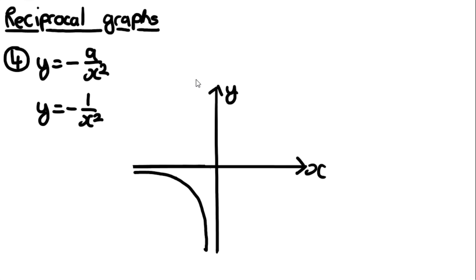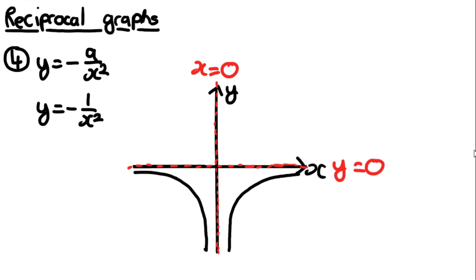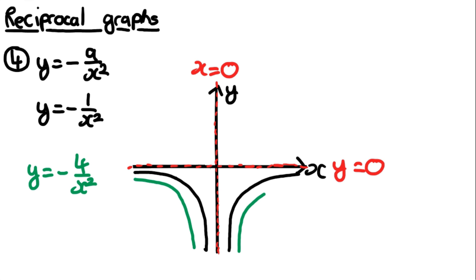The negative sign makes all the y values negative, so both curves are below the x-axis. The shape is the same except it is flipped over — mirrored in the x-axis, which will be explained in the graph transformations video. The asymptotes are once again the exact same lines: x = 0 and y = 0. And y = -4/x² will just be slightly further away from the axes.